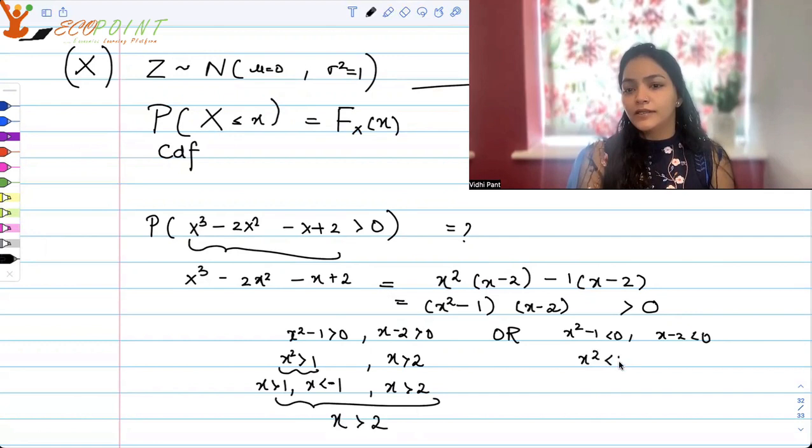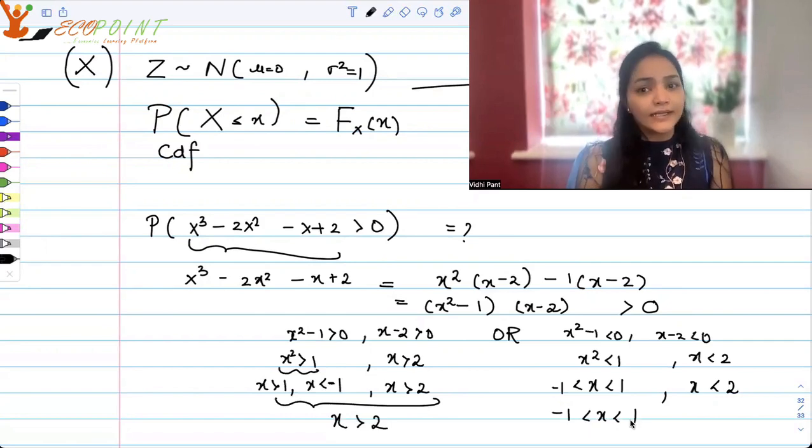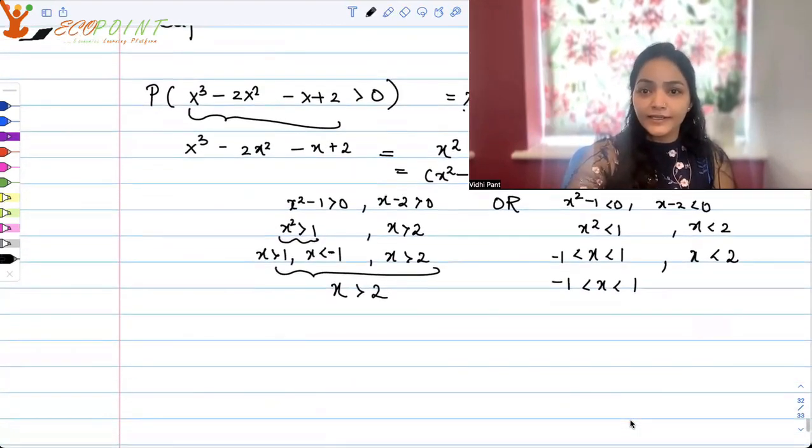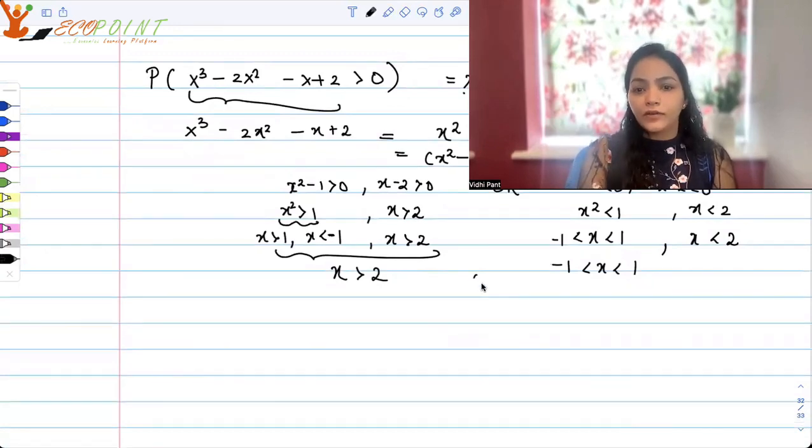Now here X² < 1, X < 2 simultaneously. X² < 1 means that X has to be between -1 and 1, and X is less than 2. So simultaneously both conditions will get satisfied when X is between -1 and 1, because X < 2 is automatically getting satisfied. So we have two scenarios.